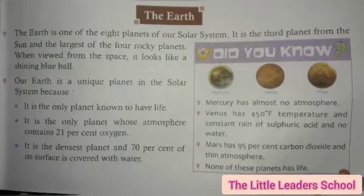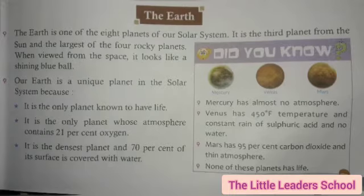When viewed from space, it looks like a shining blue ball. जब अंतरिक्ष से इसको हम देखते हैं, तो ये चमकदार नीली ball की तरह दिखाई देता है. Our earth is a unique planet in the solar system.